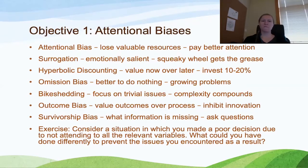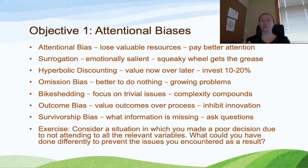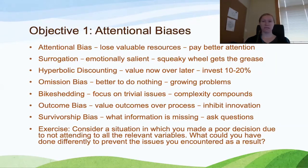Behaviorally, we value more greatly those things that are in our immediate environment and that we can access quickly and easily. The things we can get here and now are more valuable than things we might get later. Evolutionarily, this is an adaptive way to respond to our environments because the future wasn't always guaranteed. But now, with technology and longer life expectancy, we can expect to reach that later date and access higher levels of reinforcement.